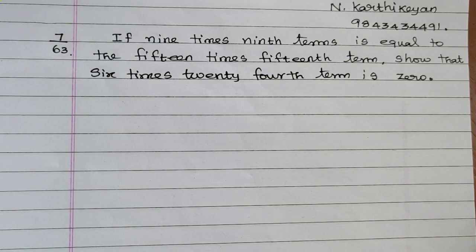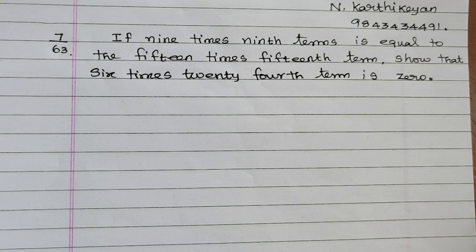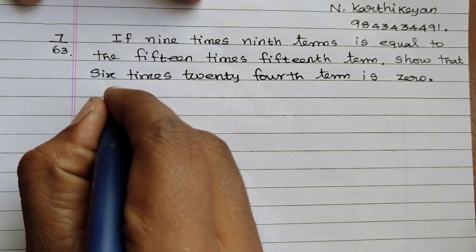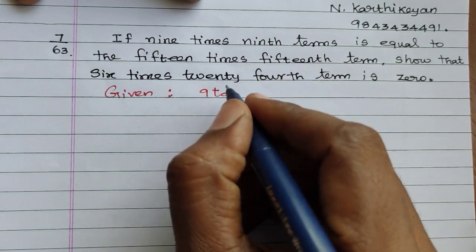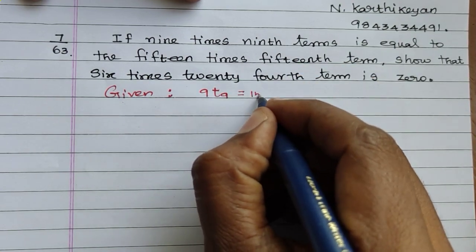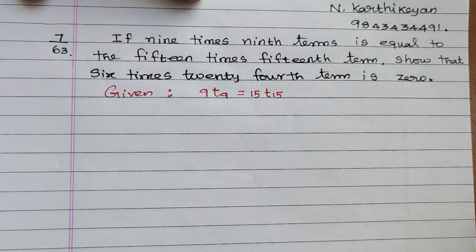Today we are discussing arithmetic progression, question number 7, page number 63. Given: 9 times the ninth term is equal to 15 times the fifteenth term. That is, 9 × t9 = 15 × t15.